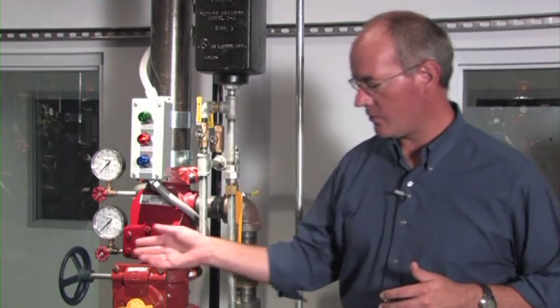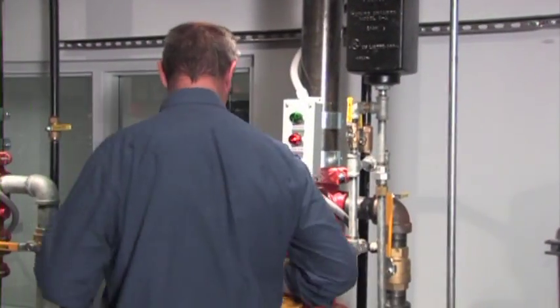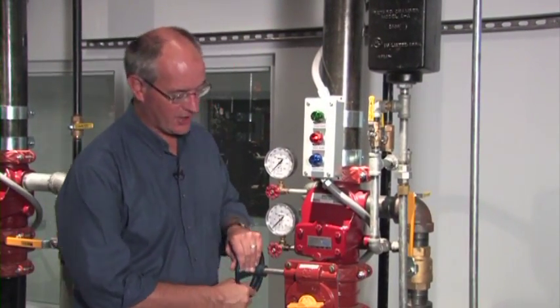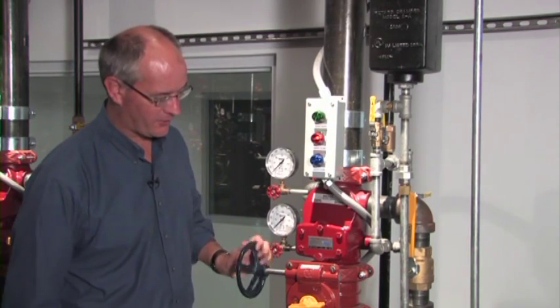So at this point, we're going to establish a water flow through the riser, which is in general a two-inch water flow through our main drain.